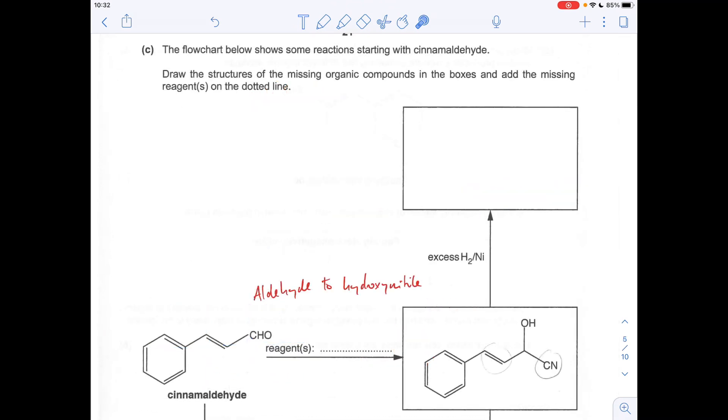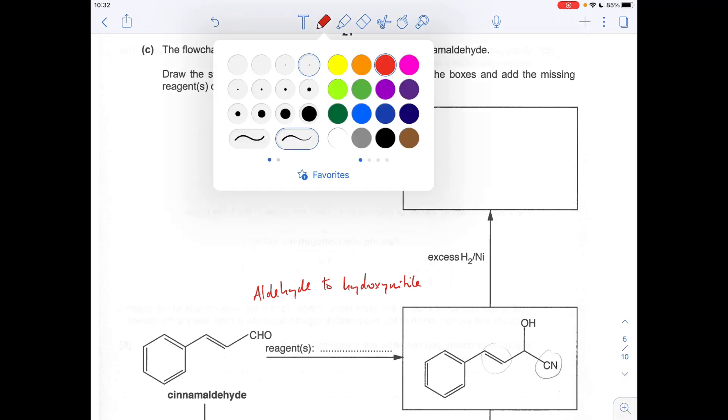So moving on to the next question now, we'll go across the middle first. So we're going from this cinnamaldehyde. So aldehyde functional group is changing into a hydroxynitrile functional group. Now we've already seen this reaction in a previous question, and the reagents were sodium cyanide and sulfuric acid.